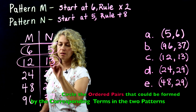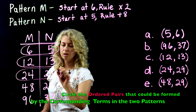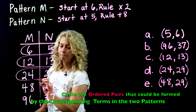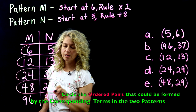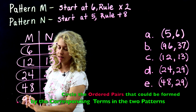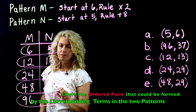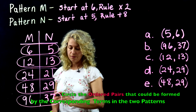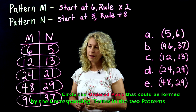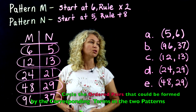The corresponding terms are: 6 and 5, 12 and 13, 24 and 21, 48 and 29, and 96 and 37. These can form ordered pairs.